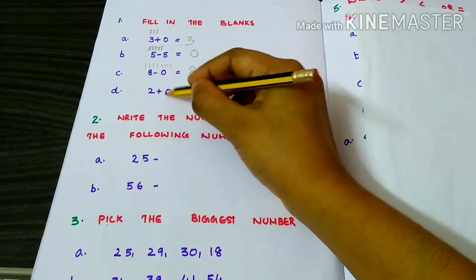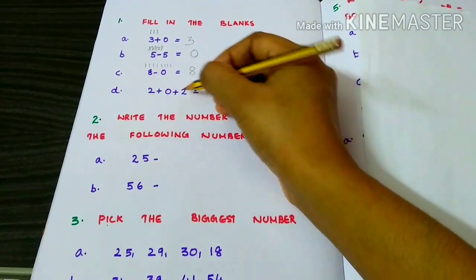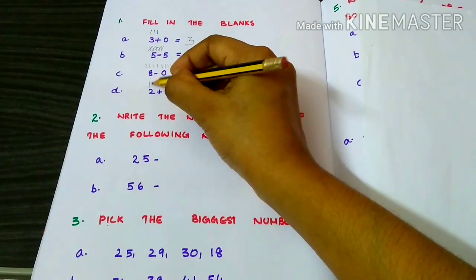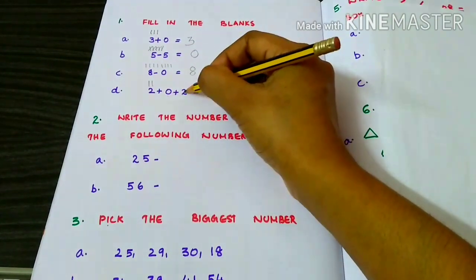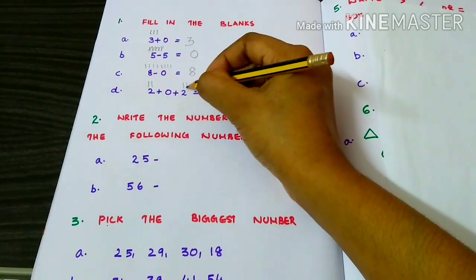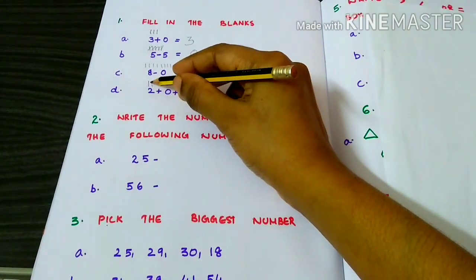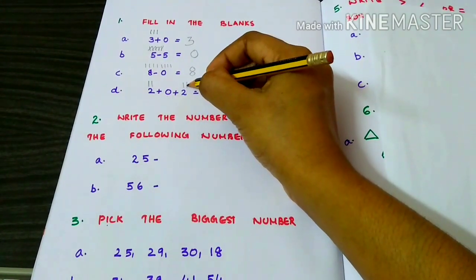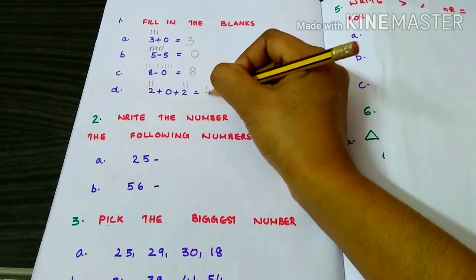2 plus 0 plus 2. Counting 1 through 4. 2 plus 0 plus 2 equals 4.